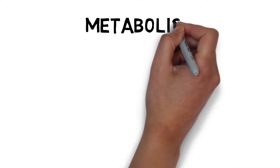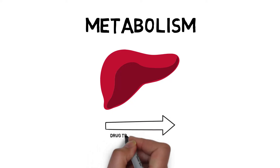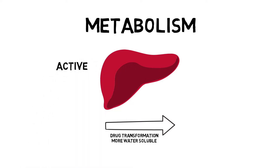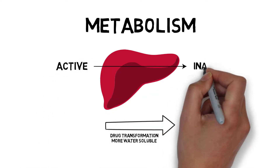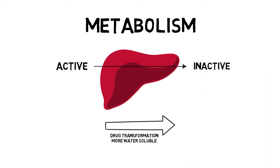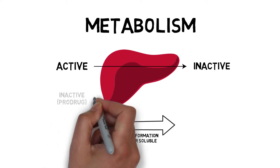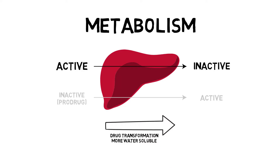Metabolism is the hepatic contribution to clearance. The goal of metabolism is to make the drug more water-soluble so that it can be excreted. A drug is usually converted from an active substance to inactive metabolites, though the reversal is also possible. Some drugs undergo metabolism to convert the inactive prodrug to the active drug — most ACE inhibitors are prodrugs like these.